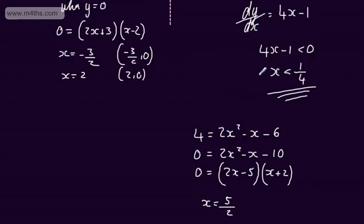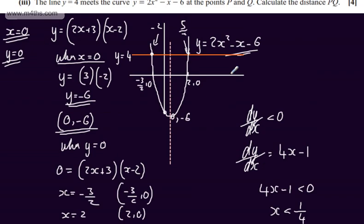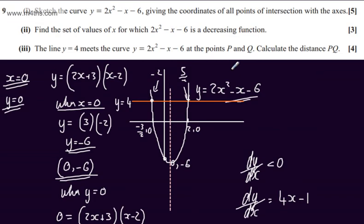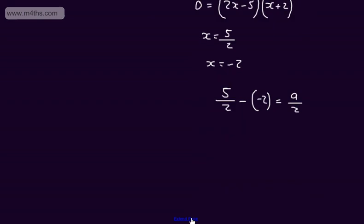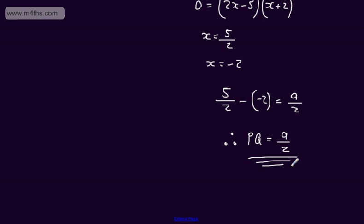So we can say the distance of these points PQ: therefore PQ will be equal to 9 over 2. So that gives my final answer, or if you like, 4 and a half.